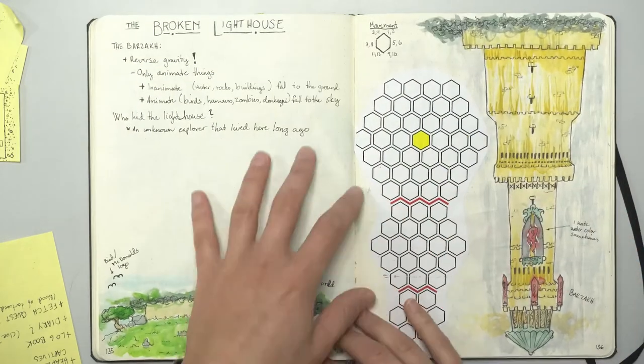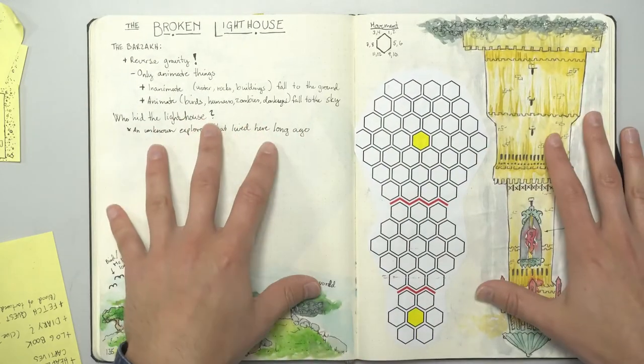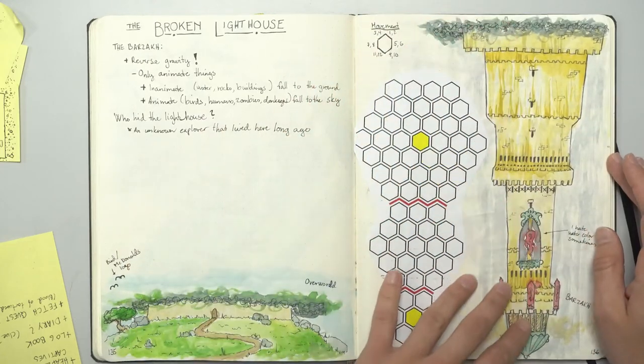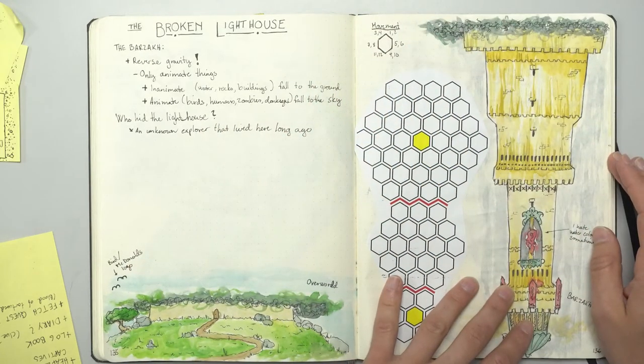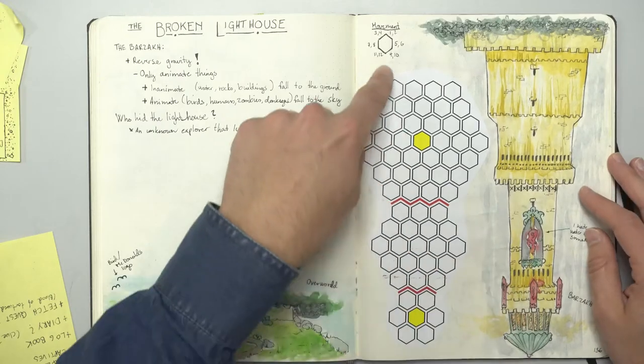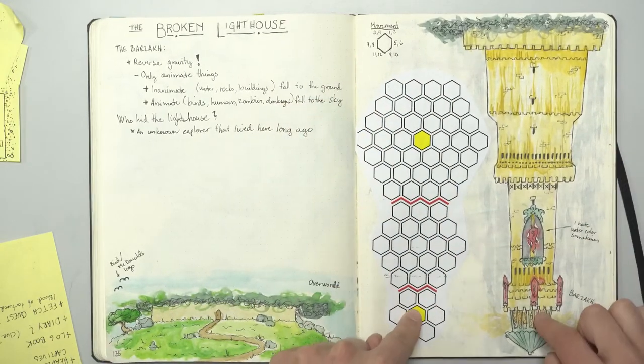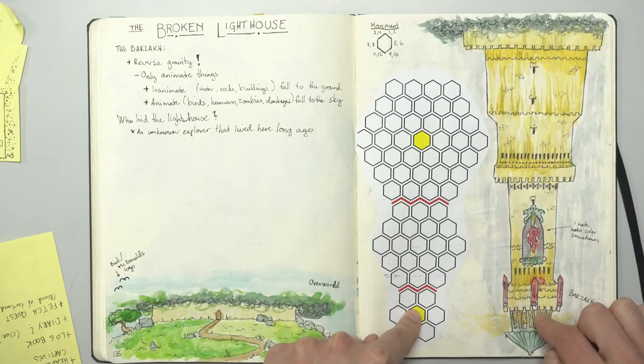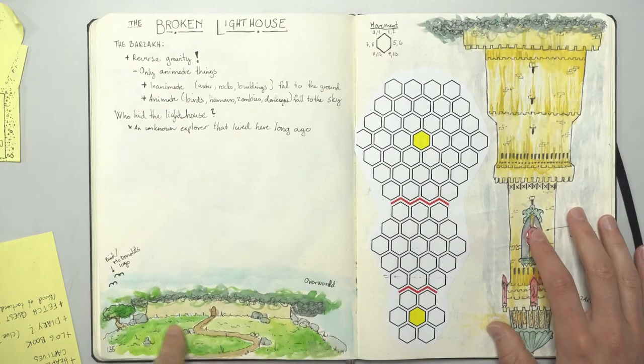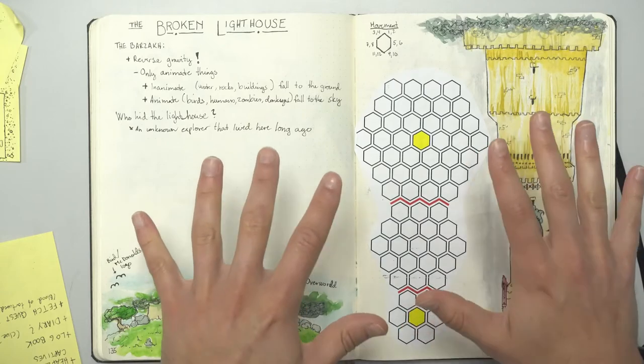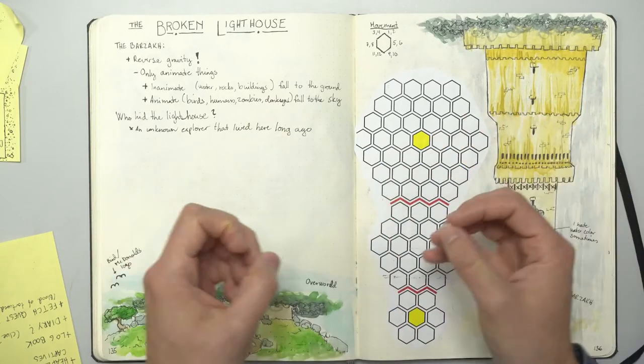Lastly, we have the broken lighthouse. A lighthouse that is trapped in the barsock and the players will have to traverse through the chaotic lighthouse to get to the top. Where they will be able to return it back to the overworld. Now let's try to fit all this together.